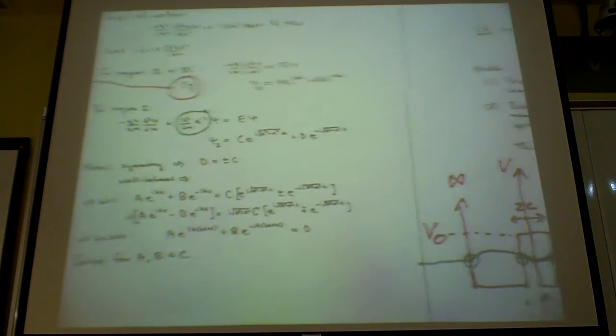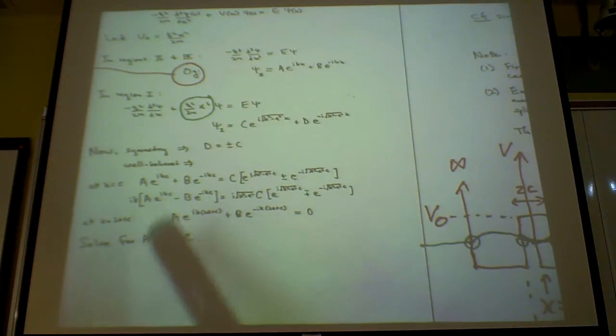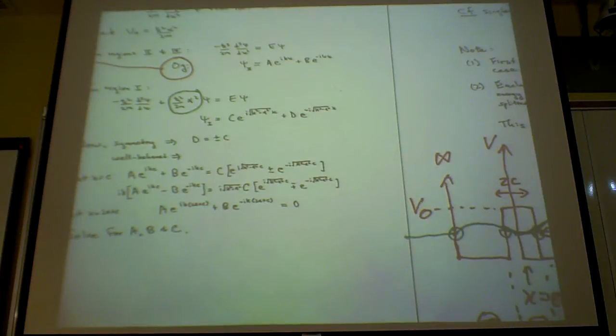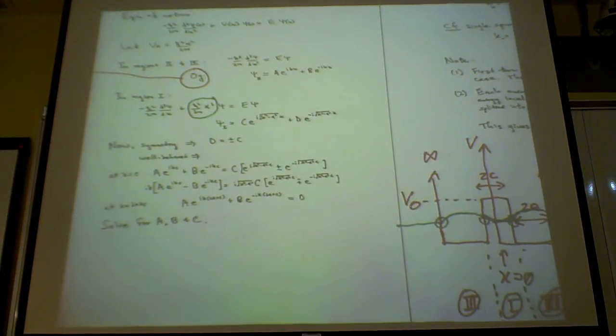When you look at boundary conditions, you set x equal to the boundary. In this case x equals c, which is this point. You have to pick which boundary, so at this boundary x equals c.